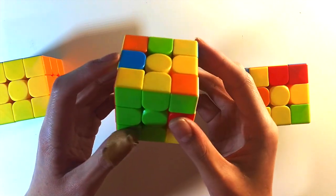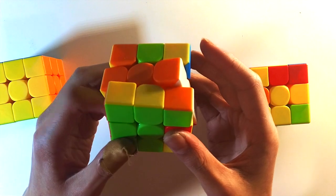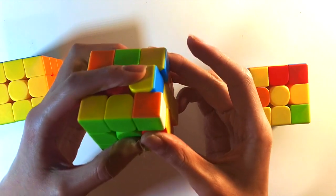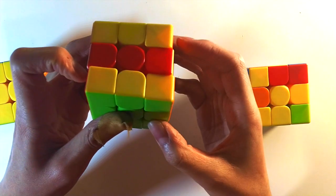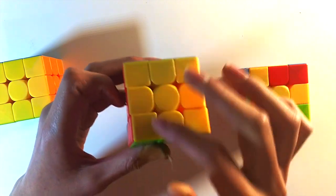So rather than starting with an S', you start with an S, then you do sexy move, S', and that'll orient all your edges.